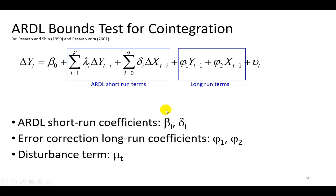This is the Bounds Test specification, which consists of two components: the short-run component and the long-run component — that is the key contribution here. The coefficients of the long-run terms are phi 1 and phi 2 in this two-variable representation, which simply includes the lagged values of y and x — the dependent and the explanatory variable, respectively. We're going to perform a Bounds Test to see if we have co-integration by rejecting the null hypothesis that phi 1 equals phi 2 equals 0. If we reject that, then we can say there is co-integration.